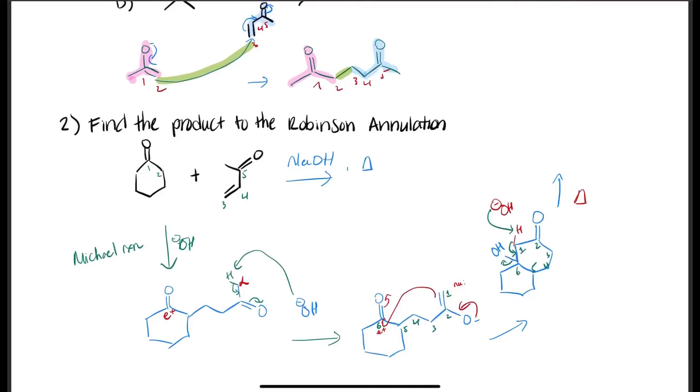And then form a pi bond between carbon number one and number six and kick out the OH. So the final product, now we have between carbon one and six there will be a pi bond.